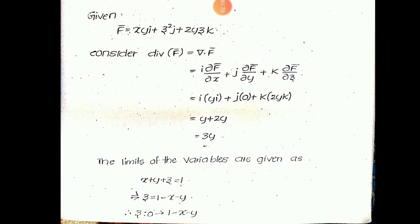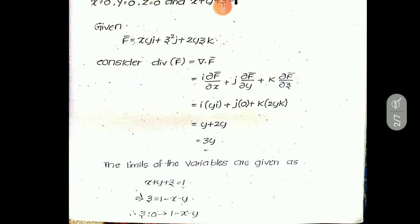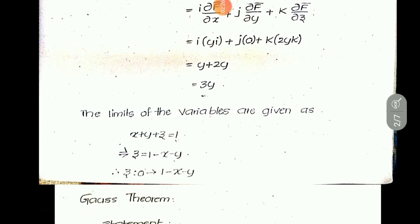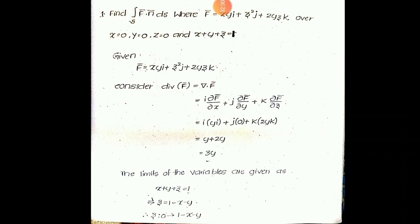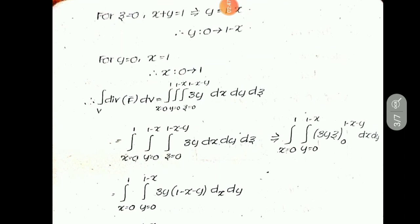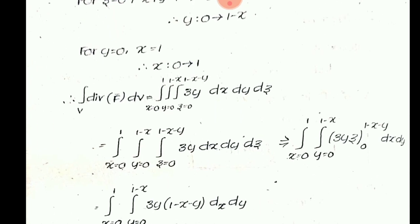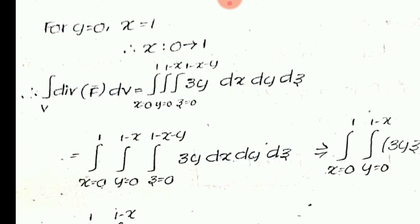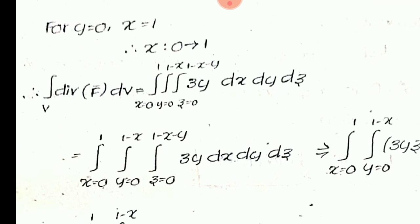To use the right-side integral, calculate the limits. From X + Y + Z = 1, focus on the third variable Z first: Z goes from 0 to 1 − X − Y. Substituting Z = 0 gives X + Y = 1, so Y limits are 0 to 1 − X. Substituting Y = 0 gives X = 1, so X limits are 0 to 1.